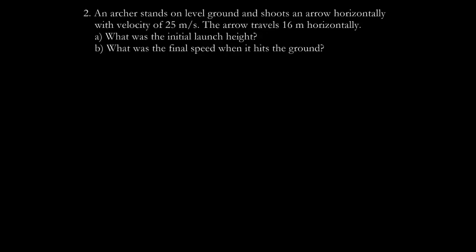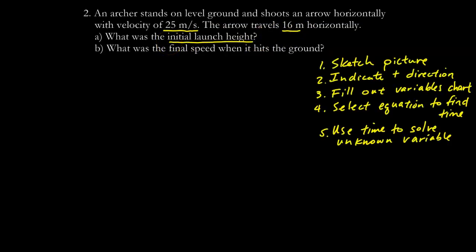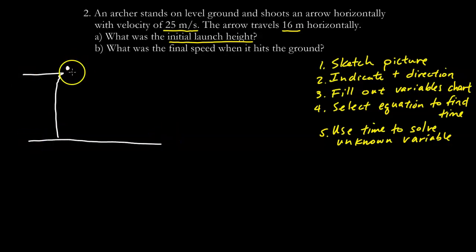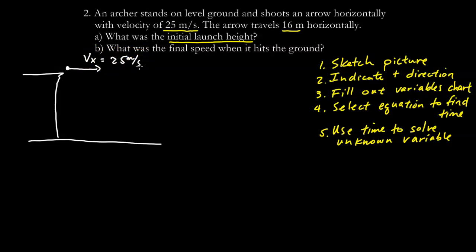An archer stands on level ground and shoots an arrow horizontally with a velocity of 25 meters per second. The arrow travels 16 meters horizontally. What was the initial launch height? I'll sketch the picture and include the given information: VX equals 25 meters per second, horizontal distance is 16 meters, and I'm looking for the vertical displacement — the launch height.